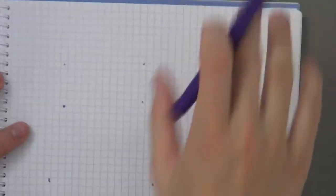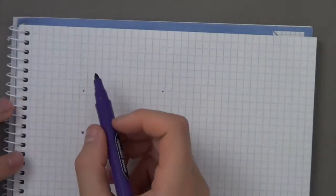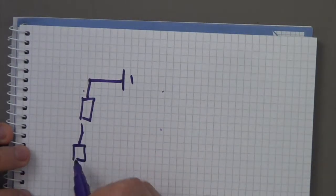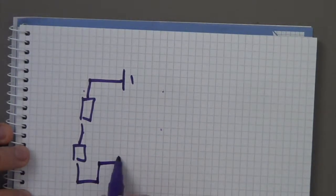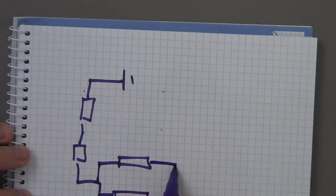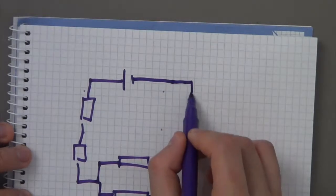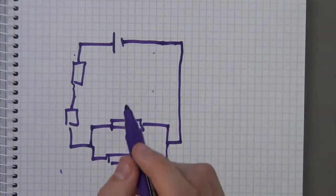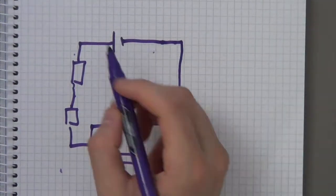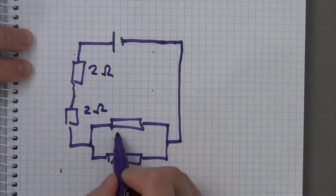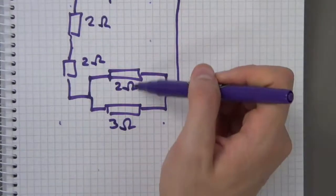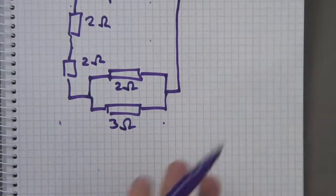Now let's do some resistor practice and work out total resistance. This is a recap of an earlier video but with a more complex example. We don't need to know the voltage if I give you the resistor values. The resistors are: two ohms, two ohms, two ohms, two ohms, and three ohms. I'll combine both rules for series and parallel resistance.